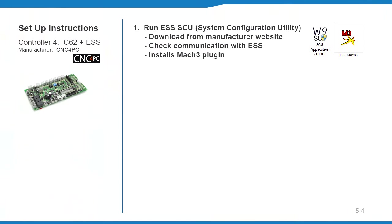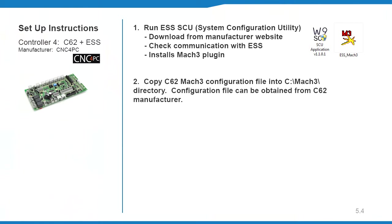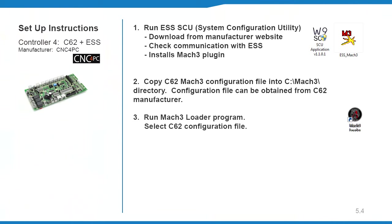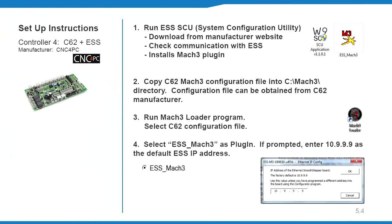Follow the ESS and C62 manufacturer instructions for setup details. Run the ESS SCU utility to check communication with the ESS and install the Mach 3 plugin. Copy the C62 configuration XML file into the Mach 3 directory. Run Mach 3 loader, then select the C62 configuration. Select ESS Mach 3 as the plugin, and if prompted, enter the default ESS IP address. Clear reset, then finish.